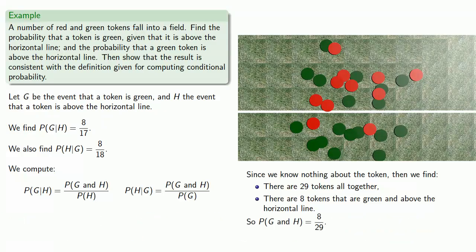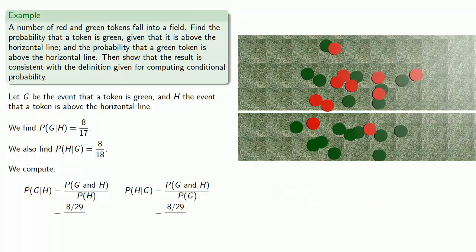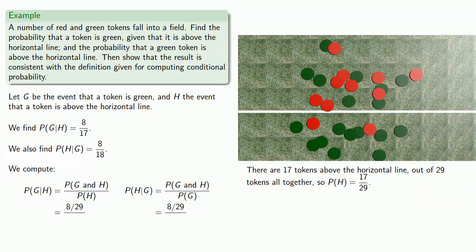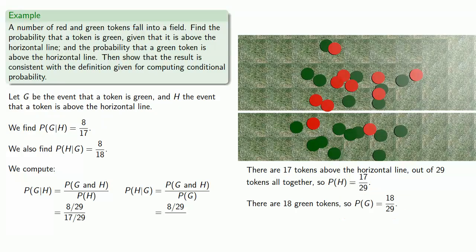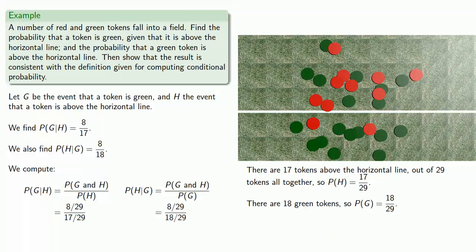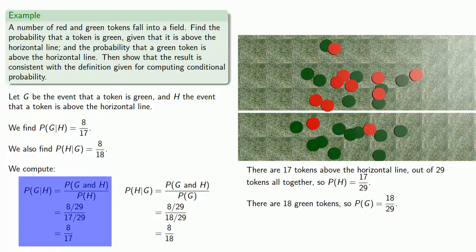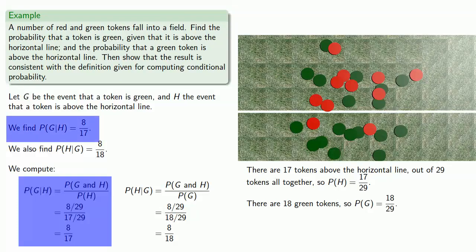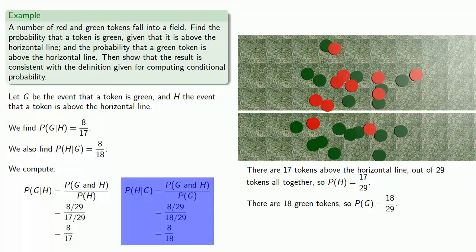So the probability a token is green and above the horizontal line is 8 out of 29. We also need the probability of H, a token being above the horizontal line, and the probability of G, a token being green. There are 17 tokens above the horizontal line out of 29 total, so P(H) = 17/29. There are 18 green tokens, so P(G) = 18/29. Filling those into our conditional probability formulas and simplifying gives us P(G|H) = 8/17, which checks, and P(H|G) = 8/18, which also checks.